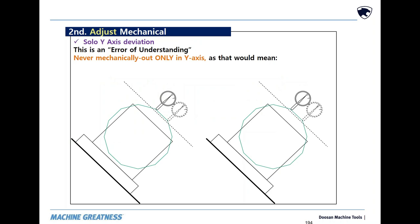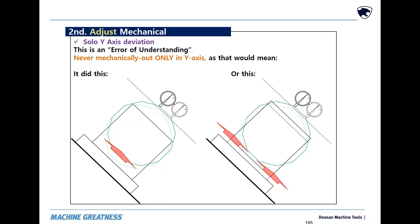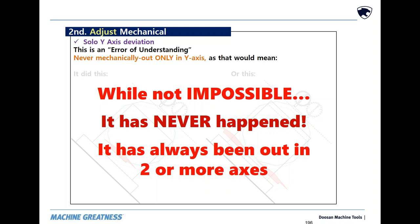Over the years, people have stated that all other axes are good, but Y was out. They would ask, how do you fix it? And the answer is, you don't. As the axis isn't going to do either of these motions, which would put it out in Y-axis only. It is not impossible for solo Y-axis deviation, but it's highly improbable, as it has never happened.